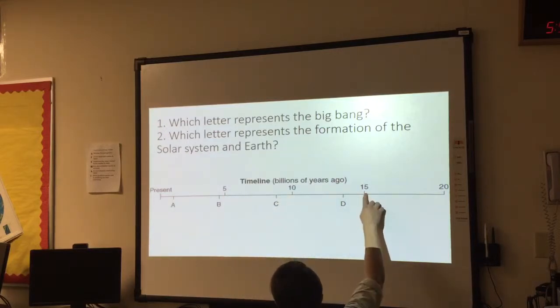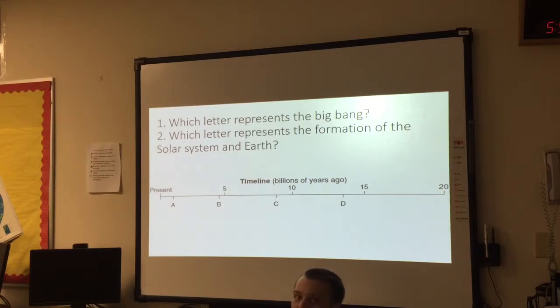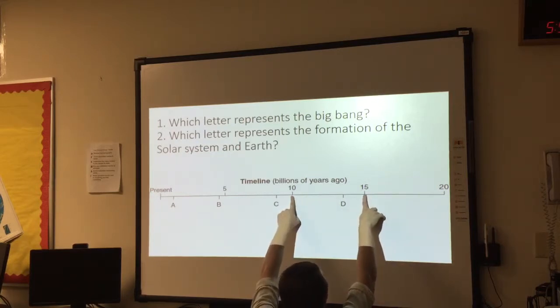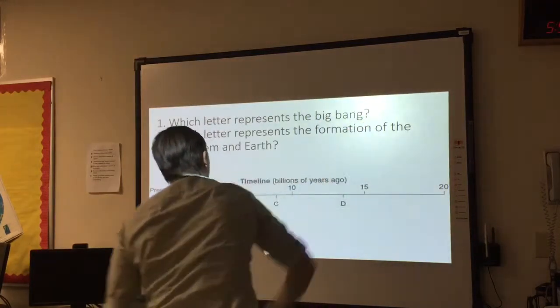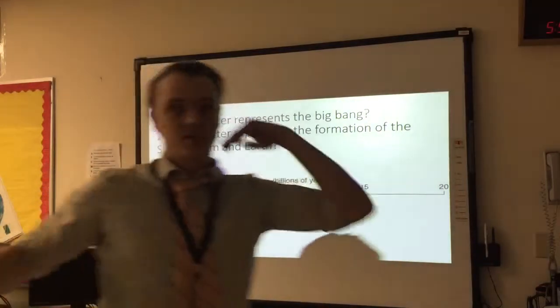And it goes by billions of years, by fives: 5 billion years, 10 billion years, 15 billion years. If we want to talk about the age of the universe, we have to memorize that it is 13.8 billion years old. Now, 13 falls between 10 and 15, so our only option would be letter D for the age of the universe or representing the Big Bang.